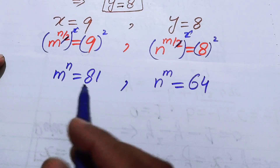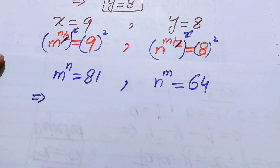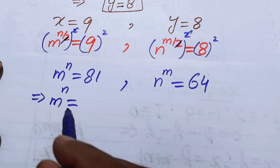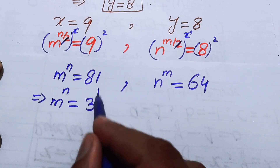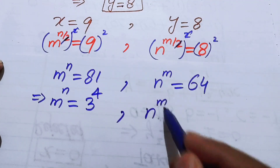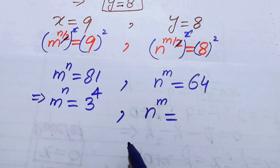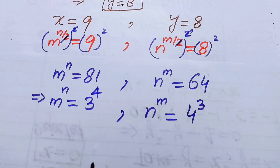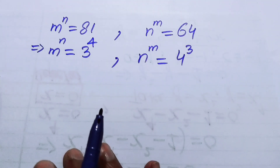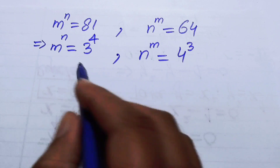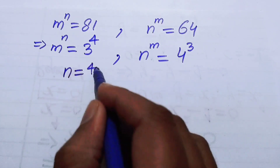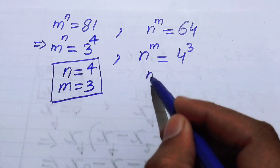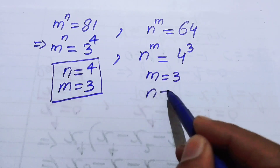Focusing on these two equations: m to the power of n equals 81, which we write as 3 to the power of 4; and n to the power of m equals 64, which we write as 4 to the power of 3. Comparing both equations, we get n equals 4 and m equals 3, confirmed from both cases.